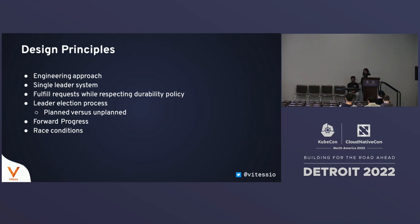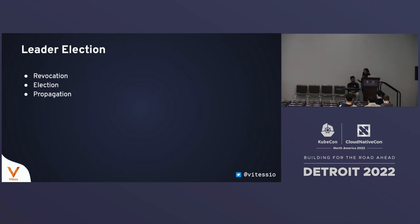The system should be able to make forward progress, and we need to deal with race conditions. Given that VTOrc is an agent, it is itself susceptible to failures, which means you may be running multiple VTOrcs across multiple regions, and we have to deal with failure modes for VTOrc itself. This has been written up in a blog series by one of the founders of Vitess, Sugu Sougoumarane, and we have a link to it towards the end.